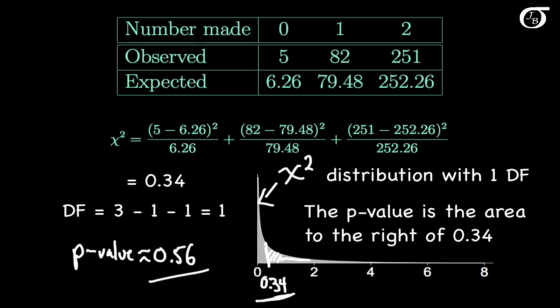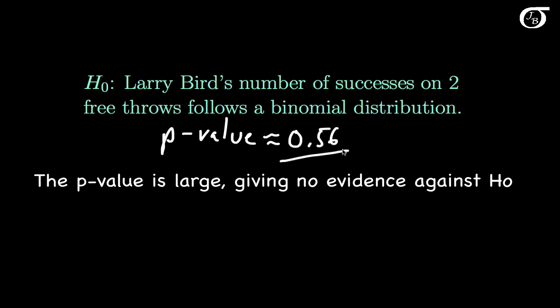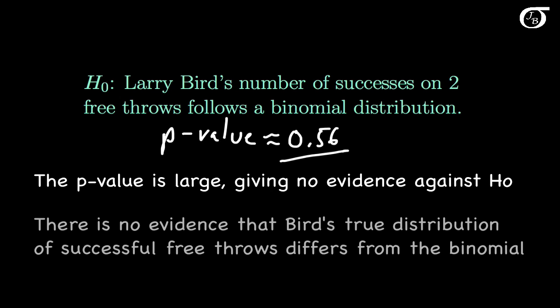This is a large p-value indicating no evidence against the null hypothesis that Larry Bird's number of successes on two free throws follows a binomial distribution. We found a p-value of approximately 0.56 — no evidence against this null hypothesis. In other words, there is no evidence that Larry Bird's true distribution of successful free throws differs from the binomial, and the binomial distribution may provide a reasonable approximation to his true distribution of successes in two free throws.